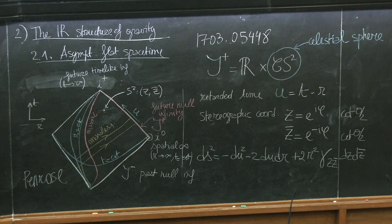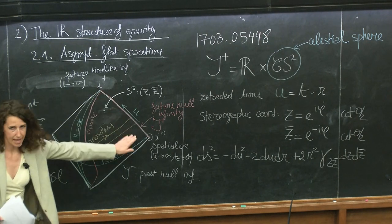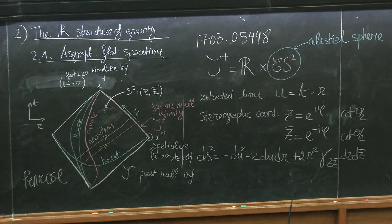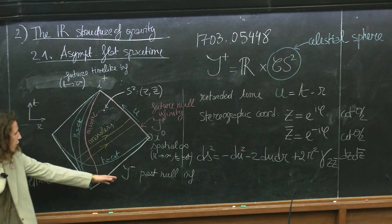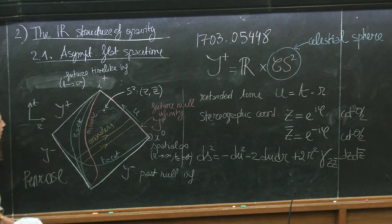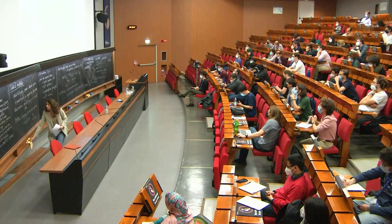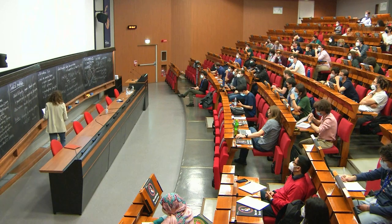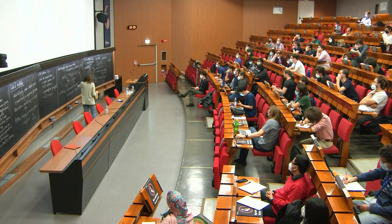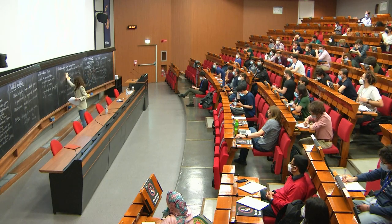There are different ways to draw this diagram — sometimes people draw the triangle version. Now we will be interested in more generic spacetimes: the so-called asymptotically flat spacetimes. Roughly speaking, an asymptotically flat spacetime is a spacetime that looks like Minkowski seen from very far away.